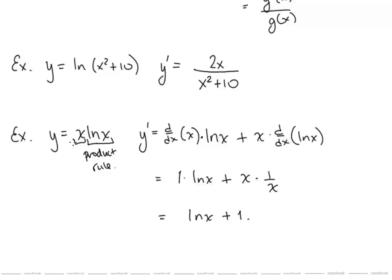In this example, we have y equals x times ln x, and so we're going to need to use the product rule. The product rule says derivative of the first times the second plus first times derivative of the second. Derivative of x is 1, derivative of ln x is 1 over x. This simplifies to 1, so we're left with ln x plus 1.